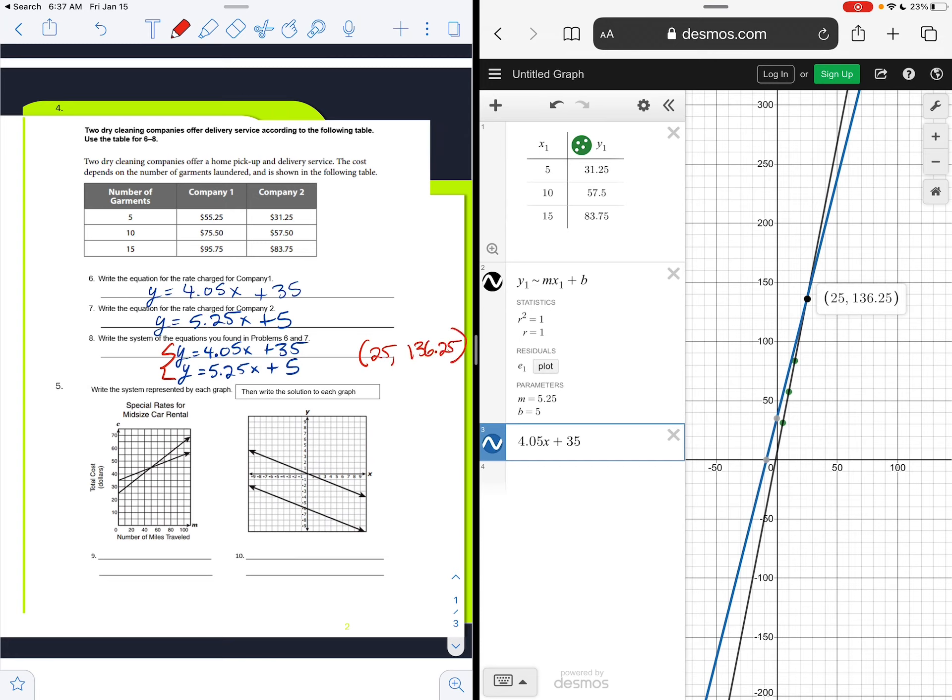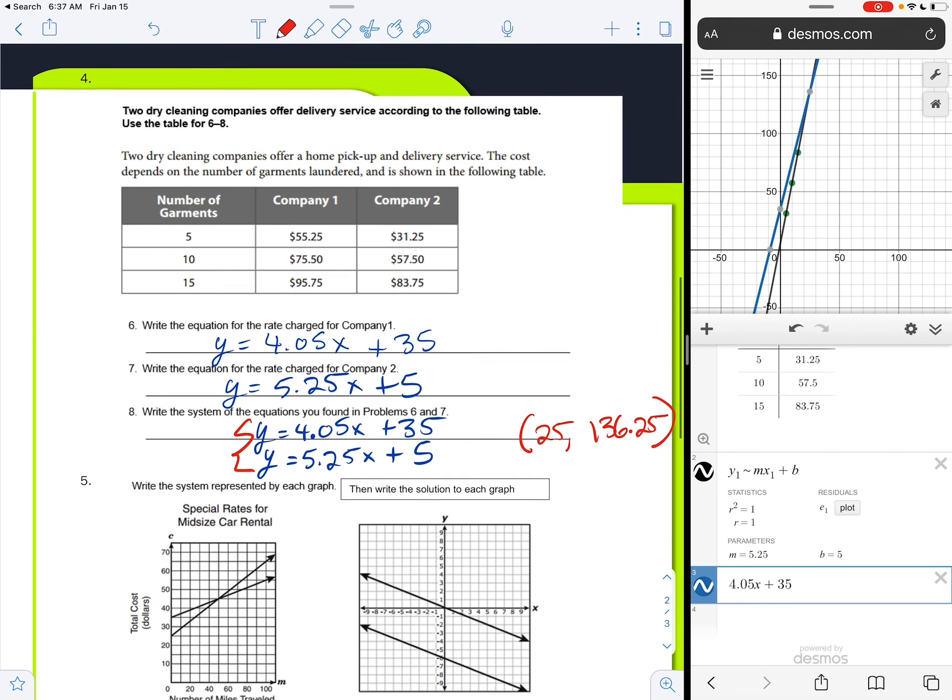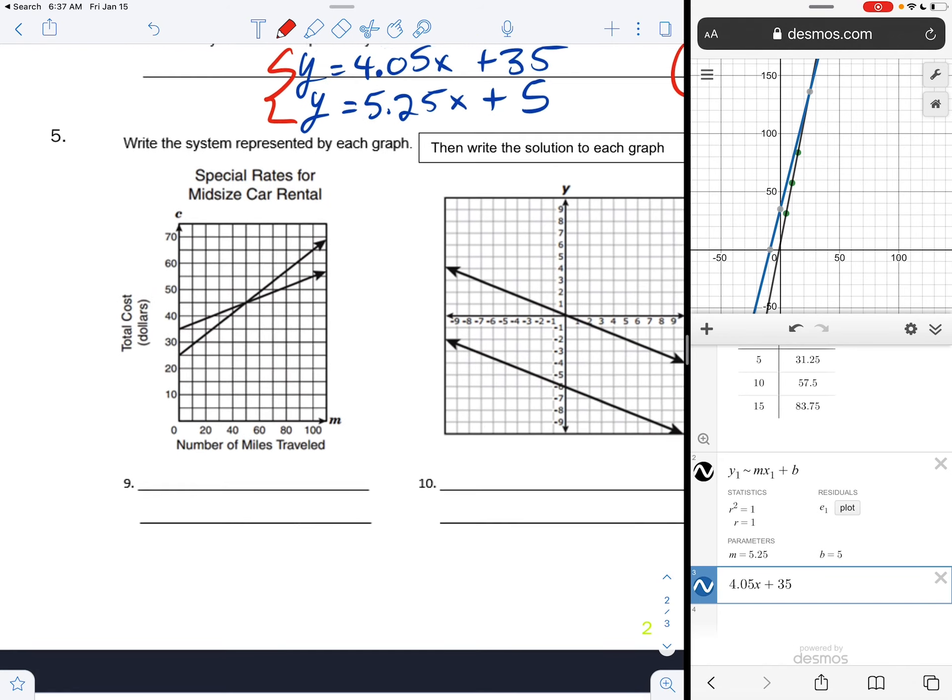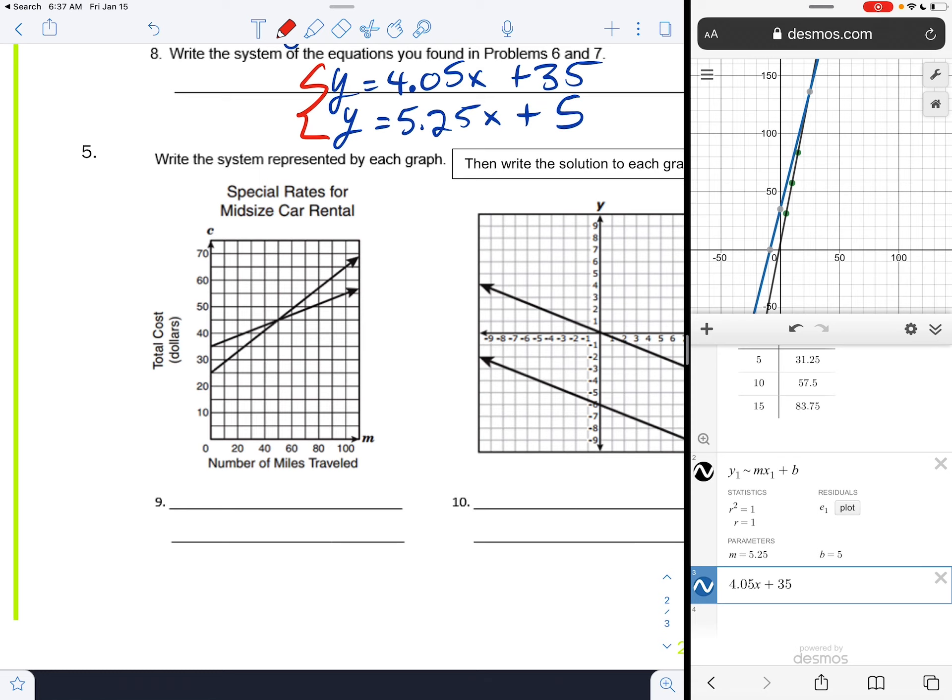Alright, so now with number five we're going into, okay, let's say we're given a graph, right, and we want to write a system from the graph. We're going to start with the special rates for midsize car rentals. We have one line that's kind of going, starting here and going this way. First off, if we're writing an equation given a graph, we're going to look for the y-intercept and then the slope. Notice the y-intercept here is right in between 20 and 30, so it looks like that y-intercept is 25. So we write y equals, we don't know the slope yet, plus 25.